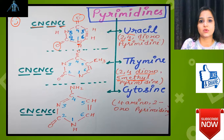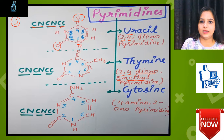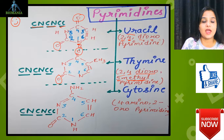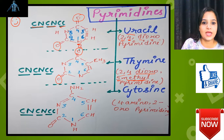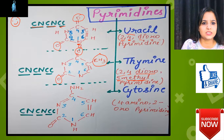That means some methylation is occurring which forms thymine. The structure is the same as uracil: on the second position there is an oxygen atom, on the fourth position there is an oxygen atom, and on the fifth carbon atom there is a methyl group. That methyl group at the fifth position is the main difference; the rest is the same.